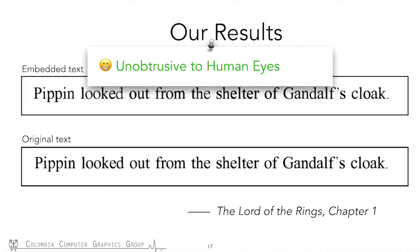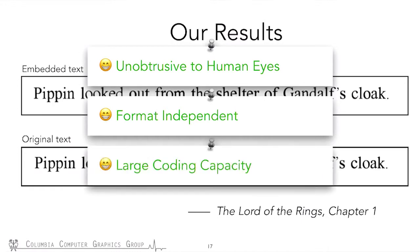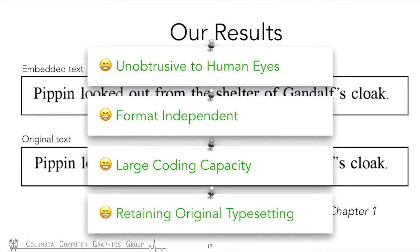Moreover, our method is format-independent — the message can be embedded in digital and printed papers. Our method also has large embedding capacity, because for each character it can have many glyph variants, which enables the character to embed more information. Lastly, unlike previous methods, we are not changing the original typesetting.